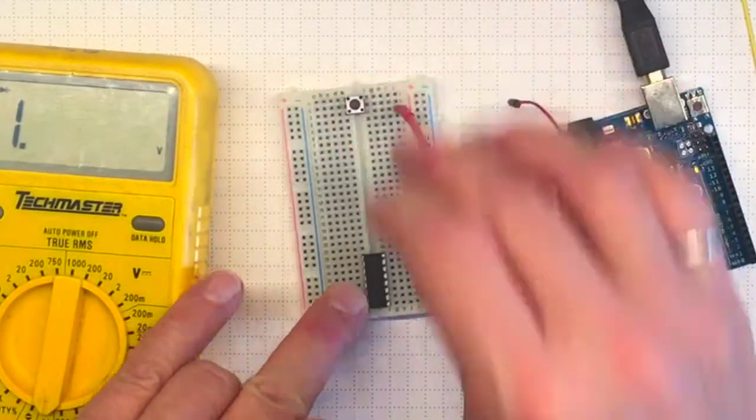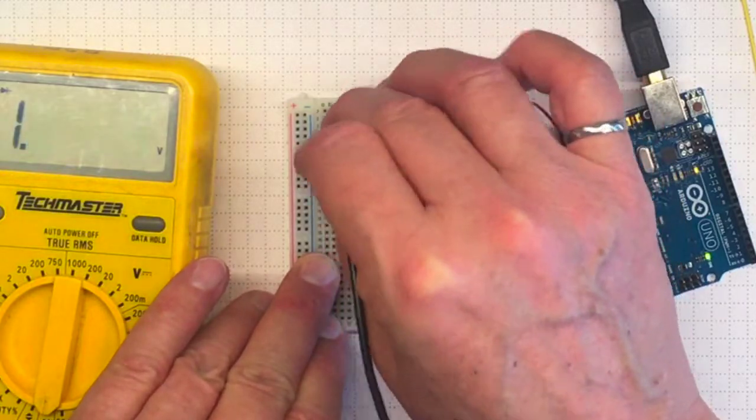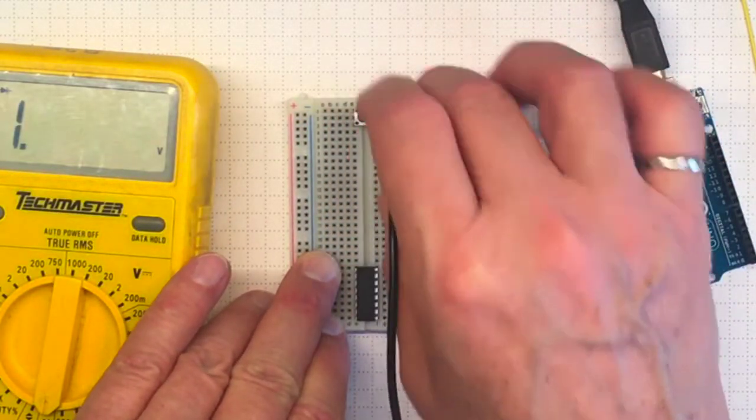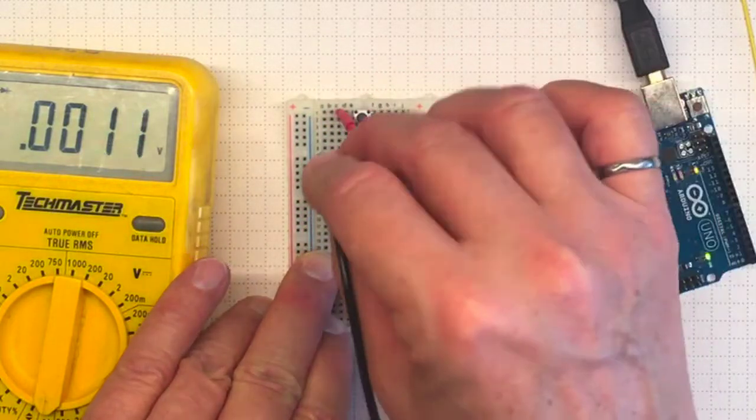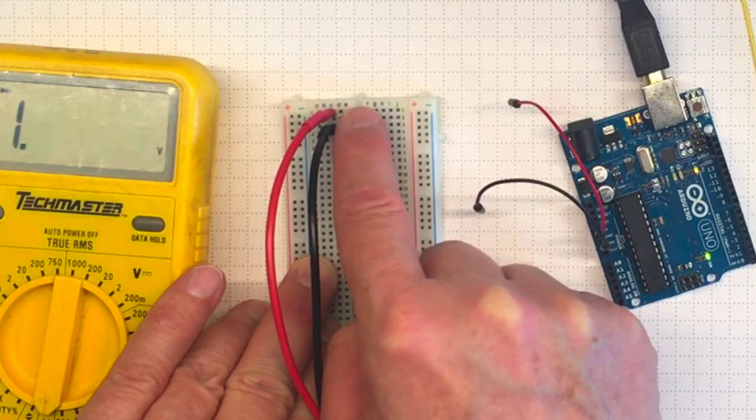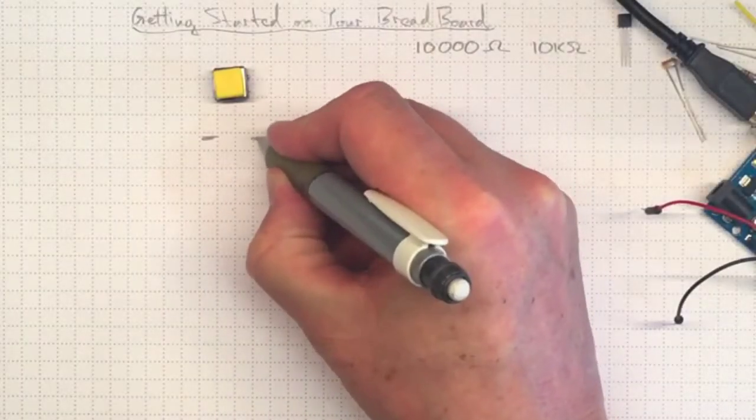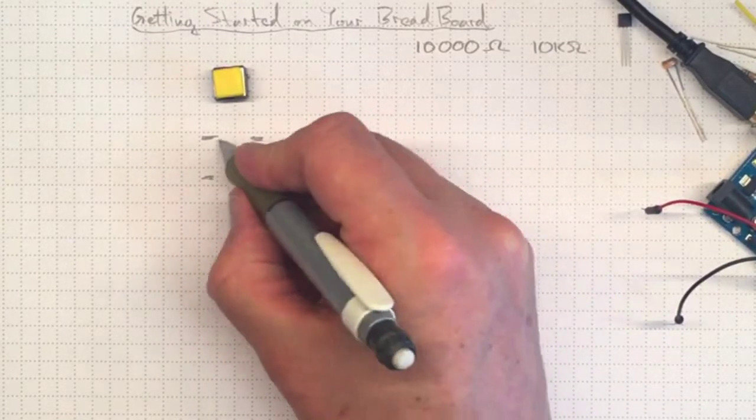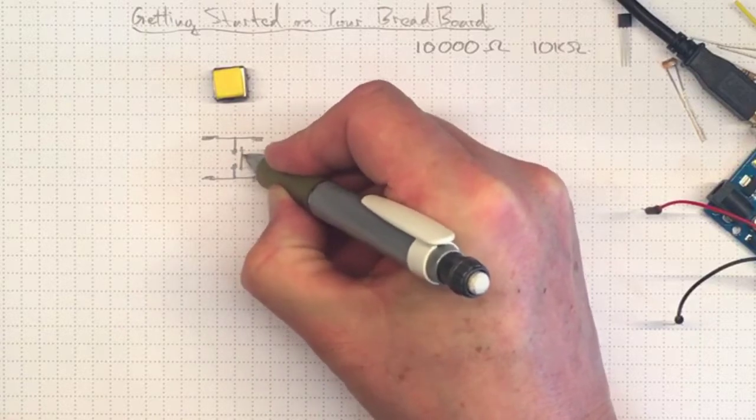Now back to the button. Let's figure out which parts are connected by using the continuity tester. Some parts are always connected, some other pins only when we press the button. Having four pins just makes it easier to mechanically attach the button to your breadboard or to a printed circuit board. The mechanical parts inside look something like this with the multiple pins, and when I push the button they make the connection.